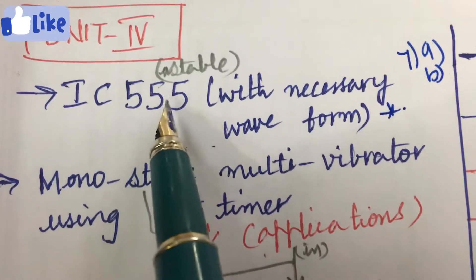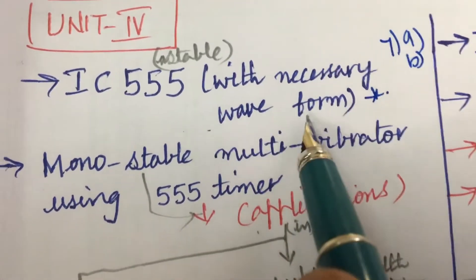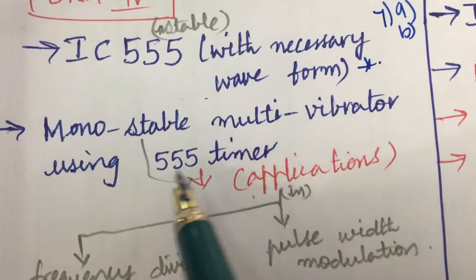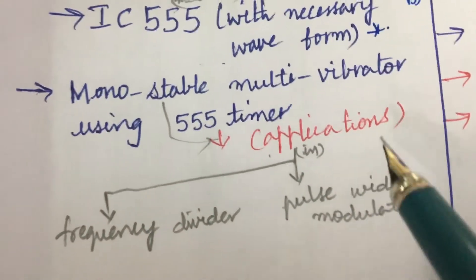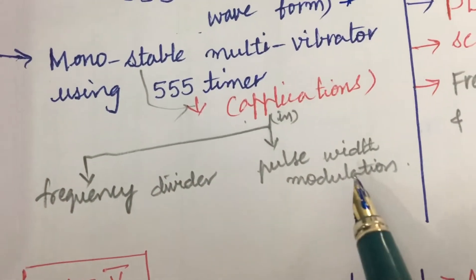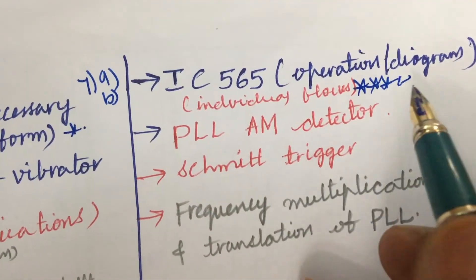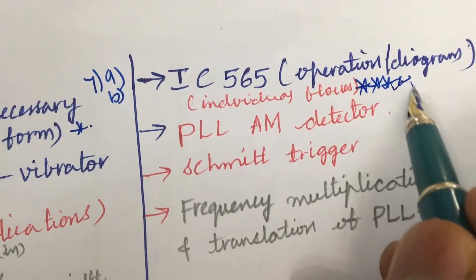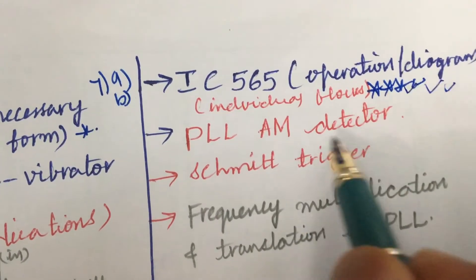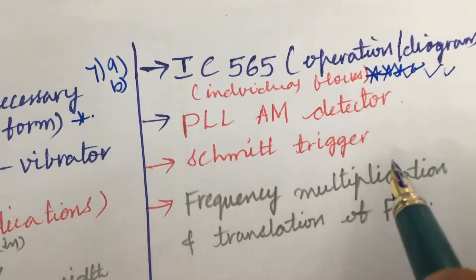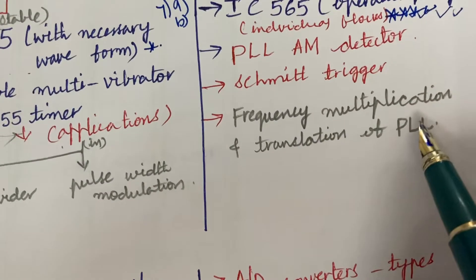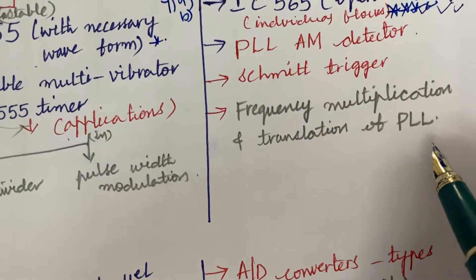If you like, this is all about Unit 4. The seventh question, it is all about IC 555 astable with necessary waveform and monostable multivibrator using 555 timer and its applications in frequency divider as well as pulse width modulation. From this part you are going to get 7A. IC 565 operation and its diagram as well as individual blocks is also one of the gunshot questions. And PLL AM detector and Schmitt trigger and the frequency multiplication and translation of PLL.